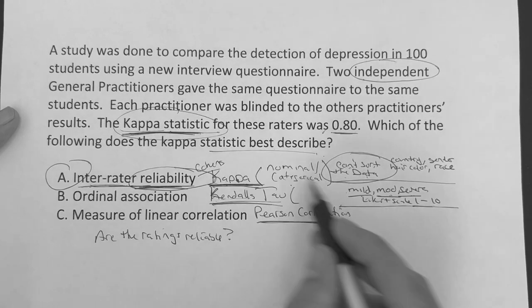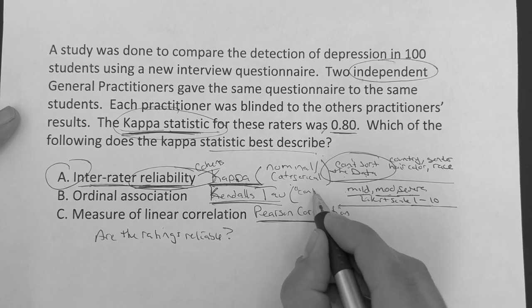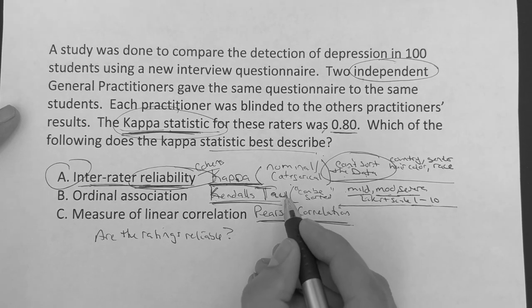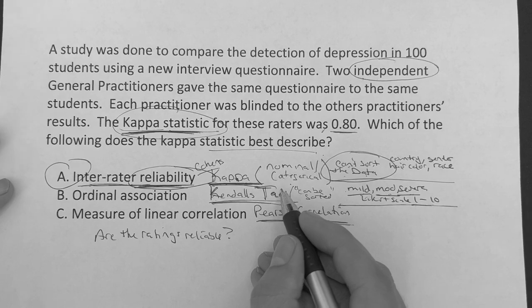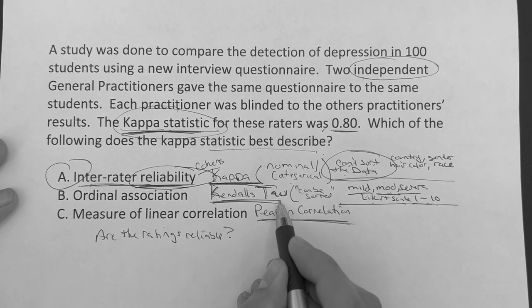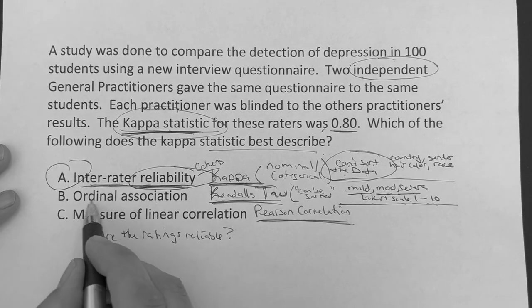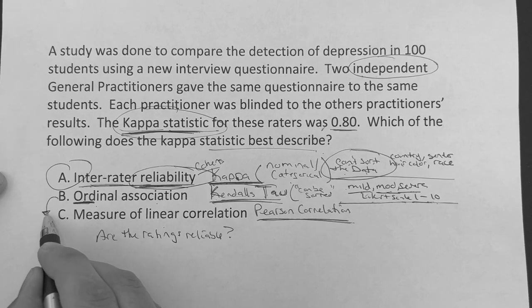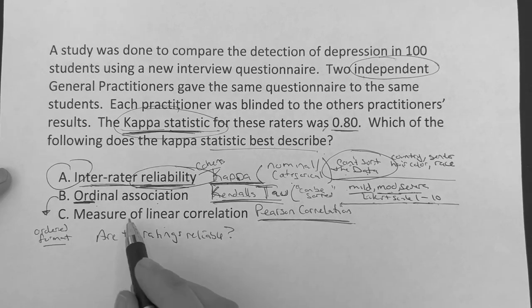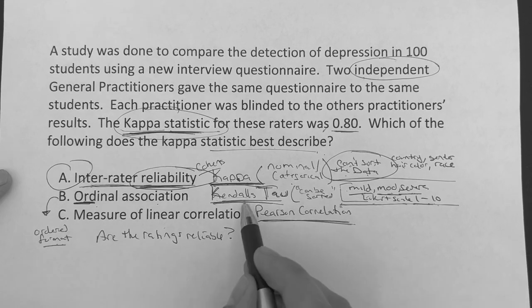Now, if you were doing some type of test and they said, well, we're using some type of data that can be organized, it can be sorted somehow, like originally, then you're going to say, okay, well, that's the Kendall's tau, okay? The Kendall's tau. And again, that goes back to mild, moderate, severe, Likert scale, one to 10. And in that situation, it's best described the ordinal association. And ordinal, all that means ORD, right? It just means that there's some type of ordered format, okay? So it's like, hey, is the ratings reliable from something that has an ordered or an originally ordered format? You'd use Kendall's tau.